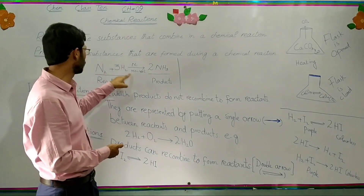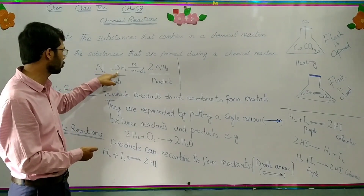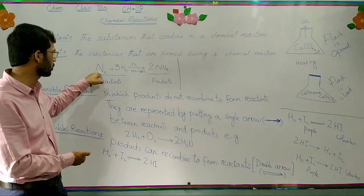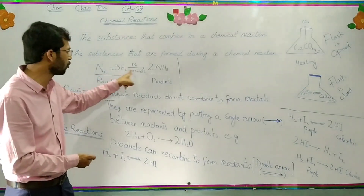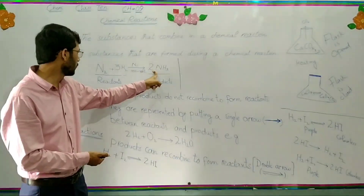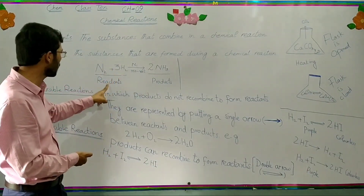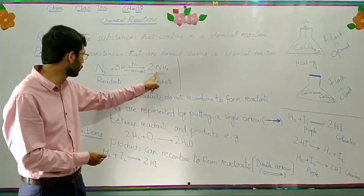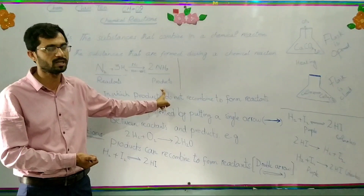For example, when one mole of nitrogen combines with three moles of hydrogen, they form two moles of ammonia. In this chemical reaction, nitrogen and hydrogen are called reactants, and ammonia that is formed during the chemical reaction is called a product.